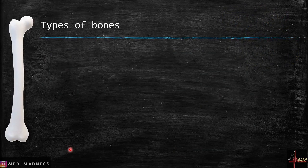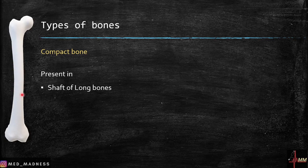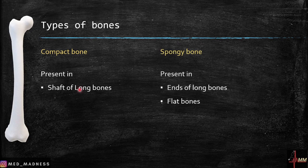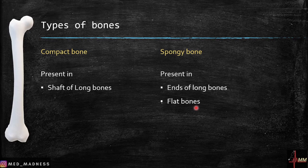There are two types of bones in the human body. The first is compact bone, which is present in the shaft of long bones. The second type is spongy bone, which is present at the ends of long bones and also in flat bones.